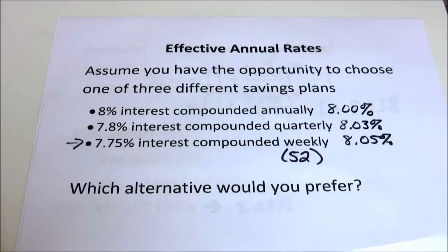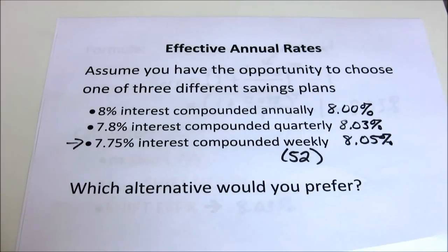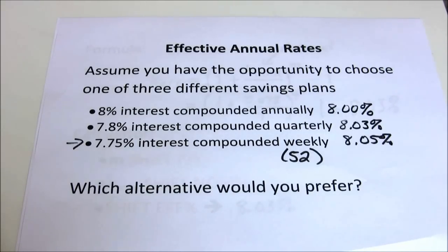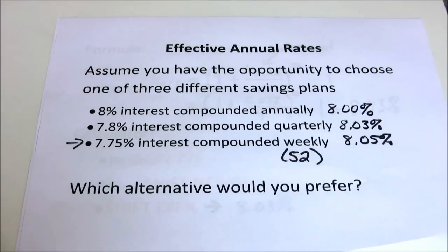Keep in mind that large corporations may have hundreds of millions or even billions of dollars in short-term deposits. If you've got an extra billion dollars, 2 hundredths of a percent interest is very important. So we want to make sure we're getting the highest rate of return possible.